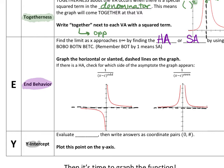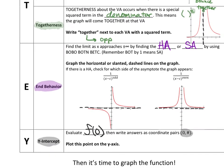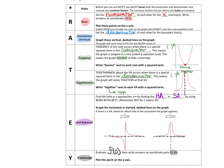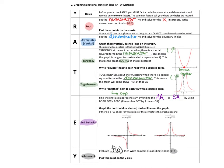The Y part of the Rady method is the y-intercept. We're going to evaluate f(0) — just plug in 0 and see what you get — write that as a coordinate pair (0, some number), and plot that on the y-axis. Once you have the roots, vertical asymptotes, tangency and togetherness labeled, end behavior graphed, and y-intercept graphed, you can play advanced connect the dots to draw the rational function, connecting or not connecting depending on the asymptotes.